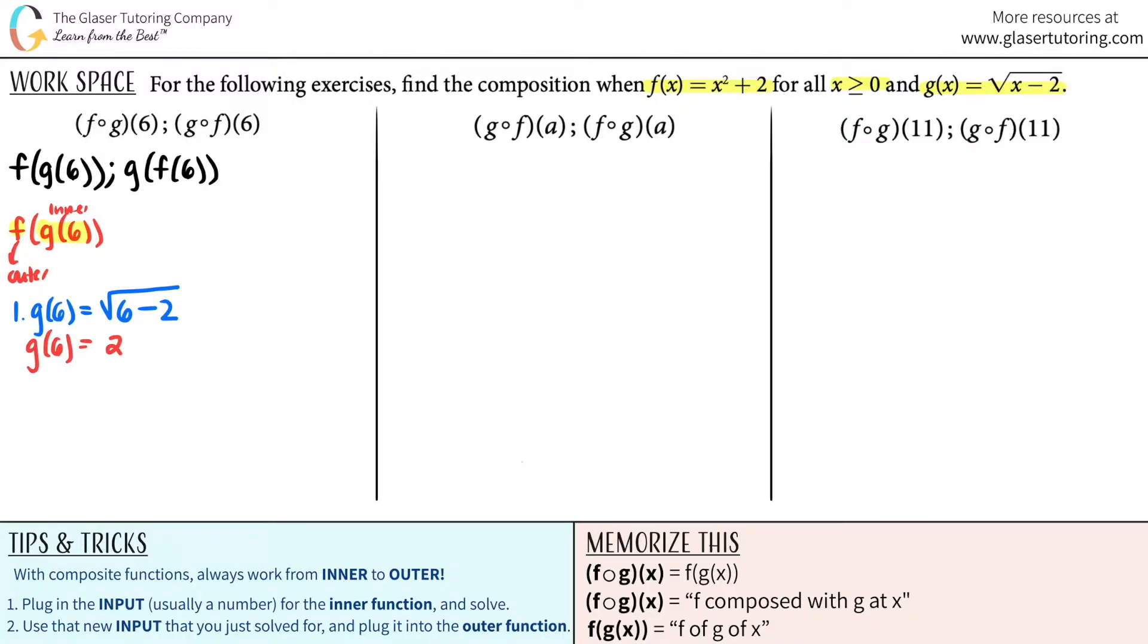Now for the next part, you're going to take that answer that you just got and use it for the outer function. And the outer function was f. So what number are you going to plug in? It's the one that you just solved for. You plug it in into the outer function and you just solve. So it would be f of 2. Well, the f function was x squared plus 2. That means that anytime that you see an x value, there's only one, you're going to plug in 2 for it. So this would be 2 squared plus 2. And then just solve. So f of 2, which is the same thing as f of g of 6, would be 2 squared is 4. 4 plus 2 is 6. And that is the answer for the first part.